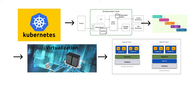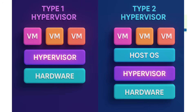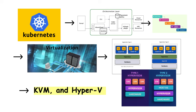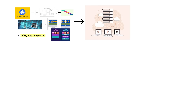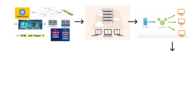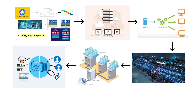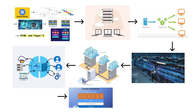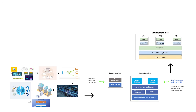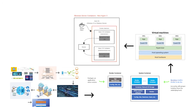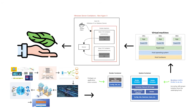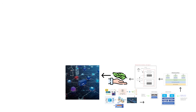Virtualization changed everything. Hypervisors like VMware, KVM, and Hyper-V let you run multiple operating systems simultaneously on the same physical hardware. Each virtual machine thinks it has exclusive access to a computer, but really they're all sharing resources managed by the hypervisor. This revolutionized data centers, allowing one physical server to host dozens of virtual machines. Containers took it further — Docker and similar systems let you package an application with all its dependencies into a single unit that runs identically everywhere. Unlike virtual machines, containers share the host OS kernel, making them incredibly lightweight. You can spin up a container in milliseconds instead of minutes.